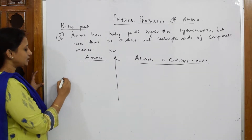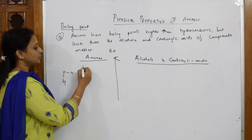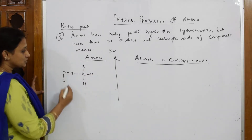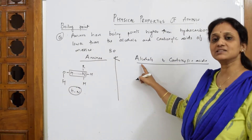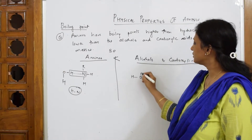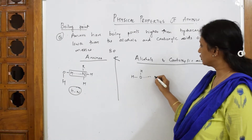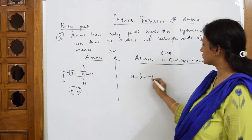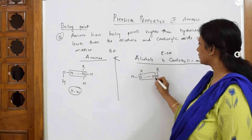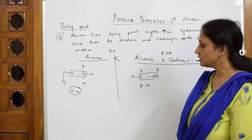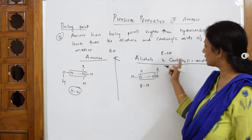In amines, hydrogen bonding is formed between hydrogen and nitrogen. Now in the case of alcohols or carboxylic acids, let us see — alcohols have the group R-O-H, and hydrogen bonding is between oxygen and hydrogen. Carboxylic acids are the same. So here the bonding is between nitrogen and hydrogen, and there it is between oxygen and hydrogen.